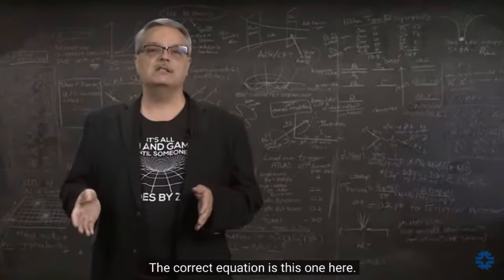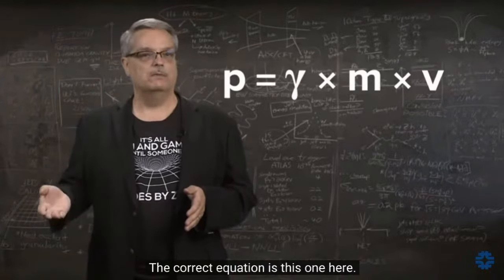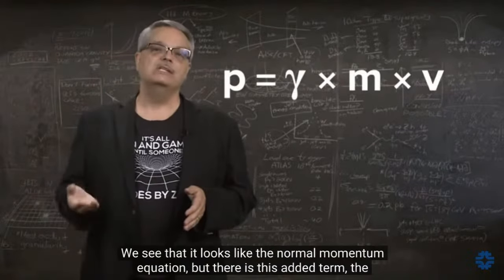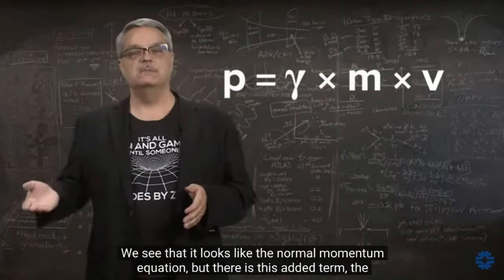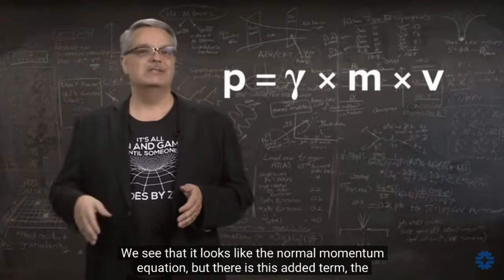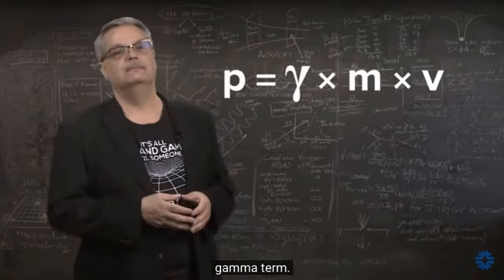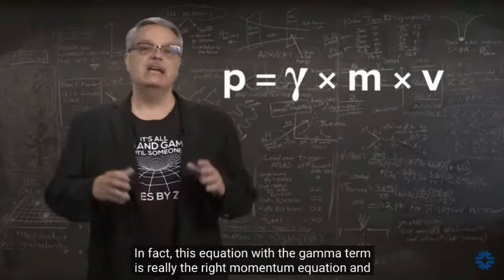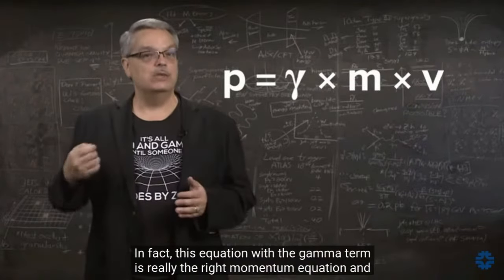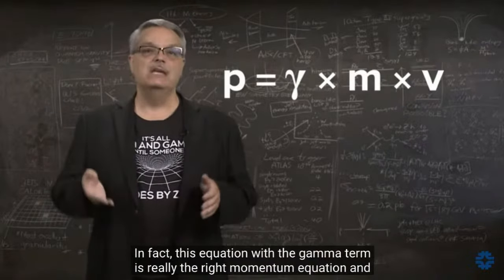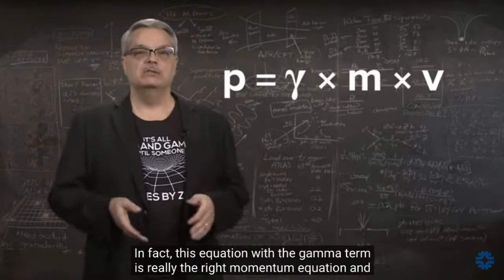At very high speeds, the classical momentum equation no longer applies. The correct equation is P equals gamma times M times V. It looks like the normal momentum equation, but there is this added gamma term. In fact, the equation with the gamma term is really the right momentum equation, and it works just fine even in day-to-day life.